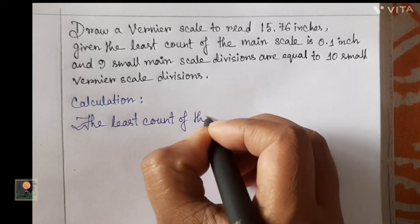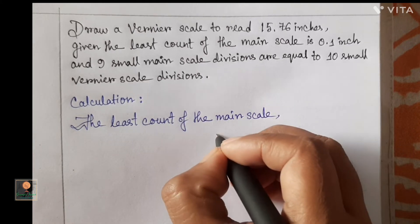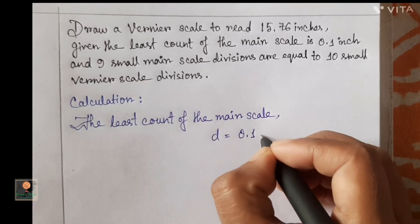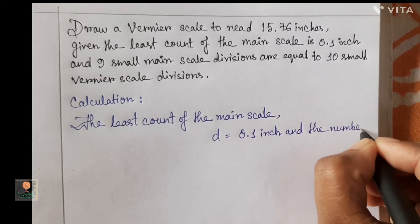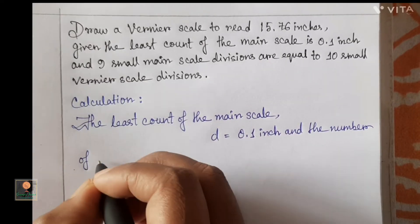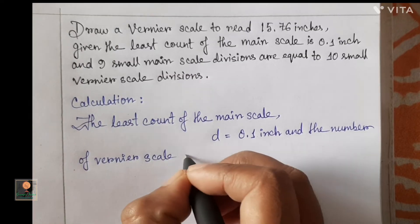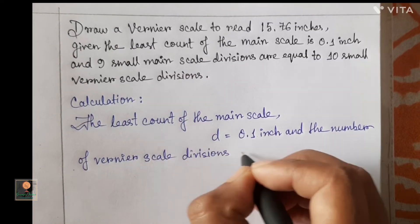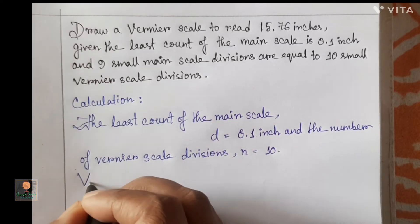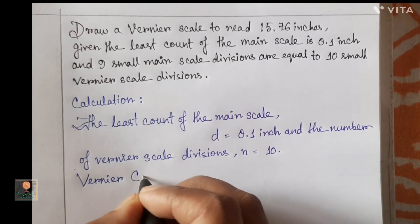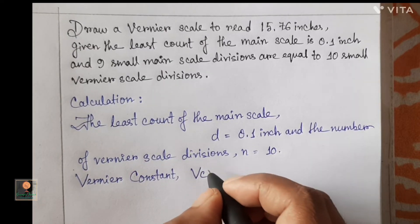The least count of the main scale is denoted by d; d equals 0.1 inch. The number of Vernier scale divisions, denoted by n, equals 10. Therefore, the Vernier constant VC equals d divided by n. This is the main formula which helps us arrive at the Vernier constant — this is the main part of the Vernier scale.